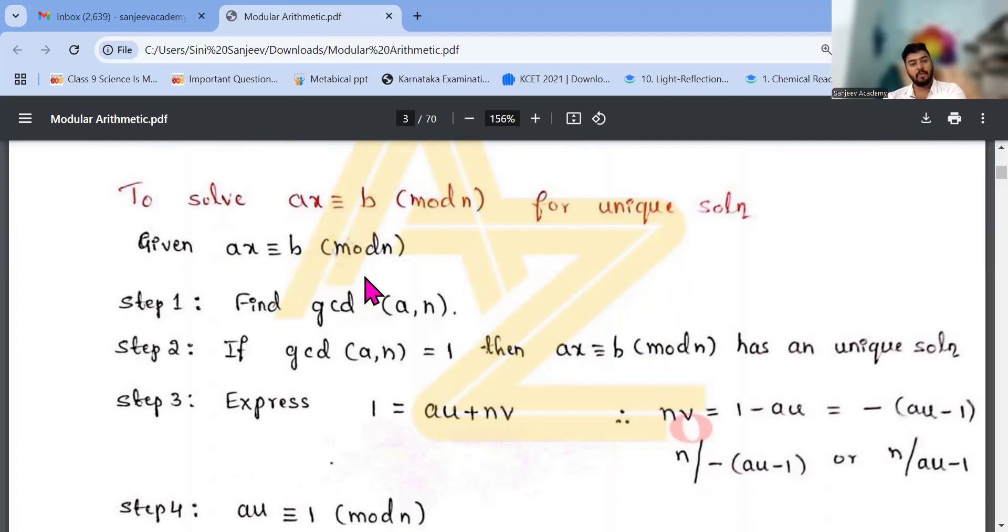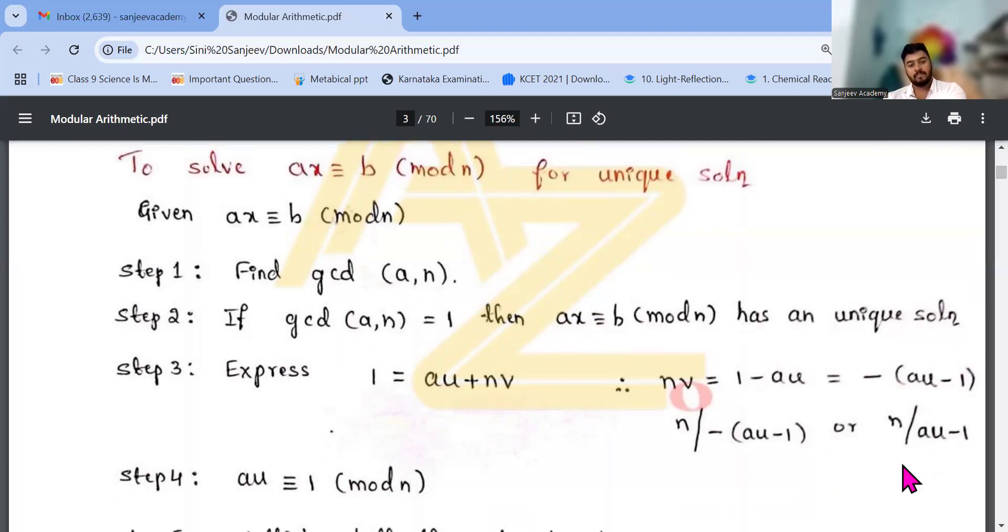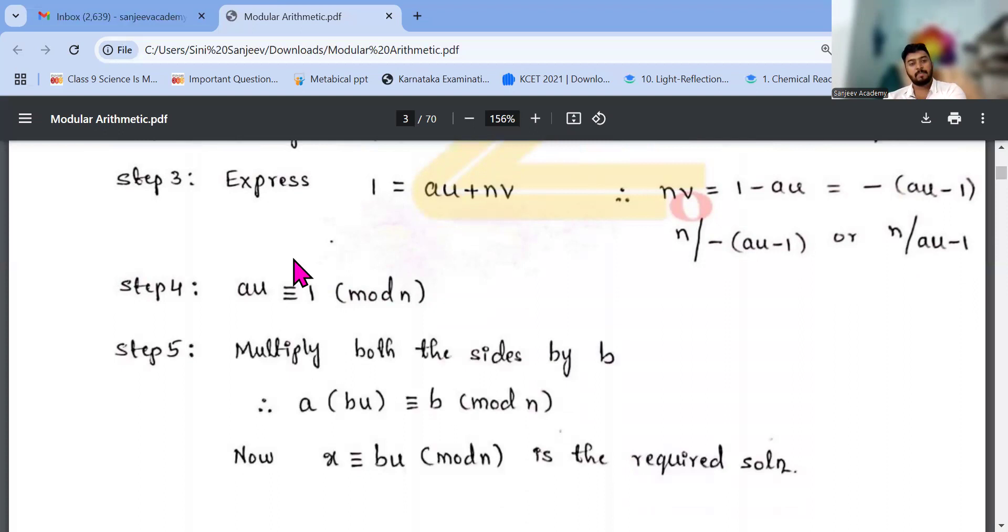So given ax congruent to b mod n. Step one, find gcd a comma n. Step two, if gcd of a comma n equals 1, then ax congruent to b mod n has a unique solution. Then express 1 equals au plus nv. And if this nv is here constant and this will go this side. Step four, au congruent to 1 mod n. Multiply both sides by b, so abu and b mod n. So x equals bu mod n is the required solution.